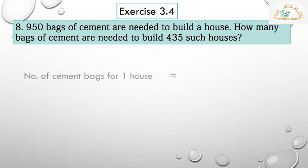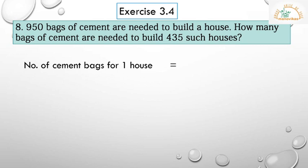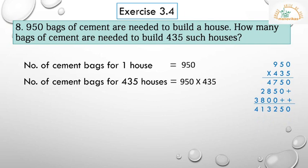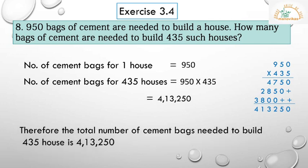Here is the solution. Number of cement bags for one house is equal to 950. Number of cement bags for 435 houses is equal to 950 multiplied by 435. After the calculation we get 4,13,250. Therefore, the total number of cement bags needed to build 435 houses is 4,13,250.